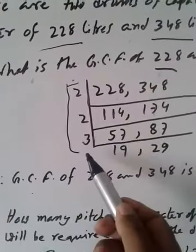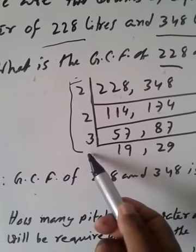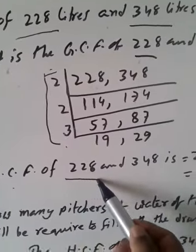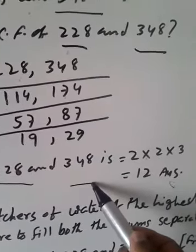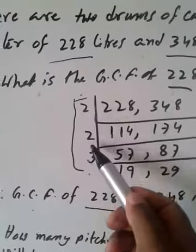If we multiply these three, these three will be GCF. Then, GCF of 228 and 348, multiply 2, multiply 2, multiply 3.